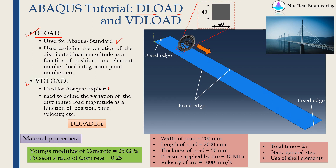The only difference is VLOAD is for Abaqus Explicit. Both subroutines are used to define a variation of distributed load magnitude as a function of many things such as position, time, element number, load integration point number, etc.